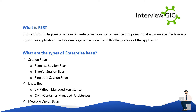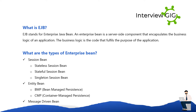What is EJB? EJB stands for Enterprise Java Bean. An Enterprise Bean is a server-side component that encapsulates the business logic of an application. The business logic is the code that fulfills the purpose of the application.